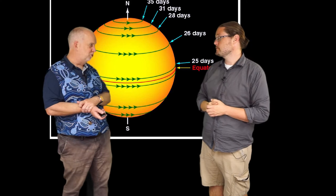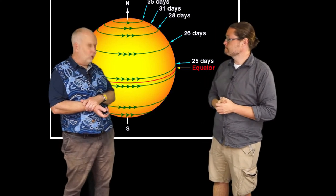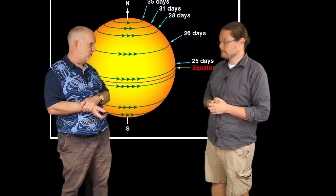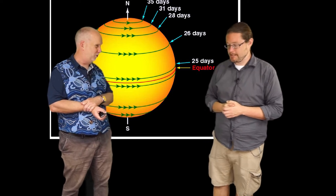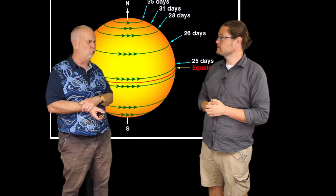And the crucial thing here is what's called differential rotation. Now the Earth rotates once every 24 hours, and every bit of the Earth rotates every 24 hours. But the Sun's not solid, it doesn't have to all rotate at the same speed.